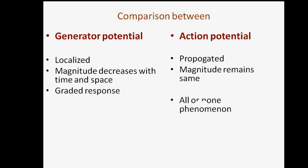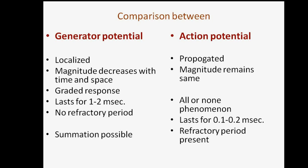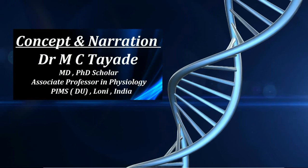Now we compare generator potential (GP) and action potential (AP). Generator potential is localized, while action potential is propagated. Generator potential magnitude decreases with time and space, while action potential magnitude remains the same. Generator potential is a graded response, while action potential is all-or-none. Generator potential lasts 1–2 milliseconds, while action potential lasts 0.1–0.2 milliseconds. In generator potential there is no refractory period, while action potential has a refractory period. Summation is possible in generator potential but not in action potential.